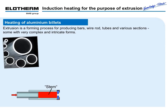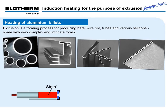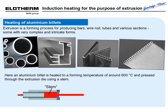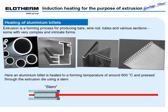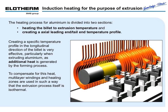Extrusion is a forming process for producing bars, wire rod, tubes and various sections, some with very complex and intricate forms. An aluminum billet is heated to a forming temperature of around 600 degrees Celsius and pressed through the extrusion die using a stem. The heating process for aluminum is divided into two sections: heating the billet to extrusion temperature and creating an axial temperature profile. Creating a specific temperature profile in the longitudinal direction of the billet is very effective, particularly when extruding aluminum, as additional heat is generated by the forming process. To compensate for this heat, multi-layer windings and heating zones are used such that the extrusion process itself is isothermal.